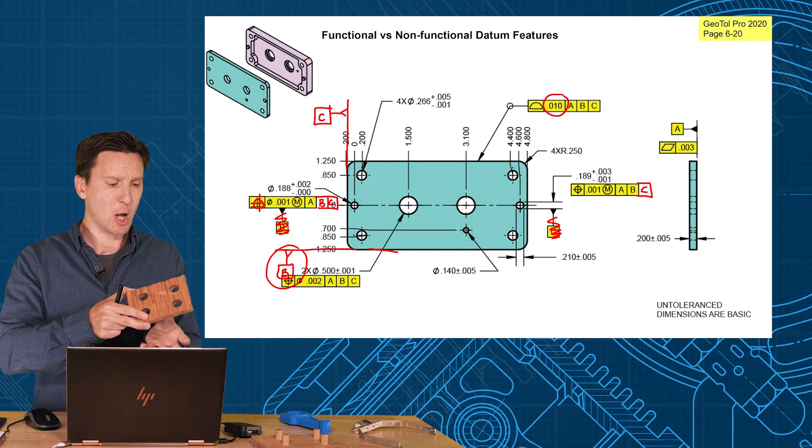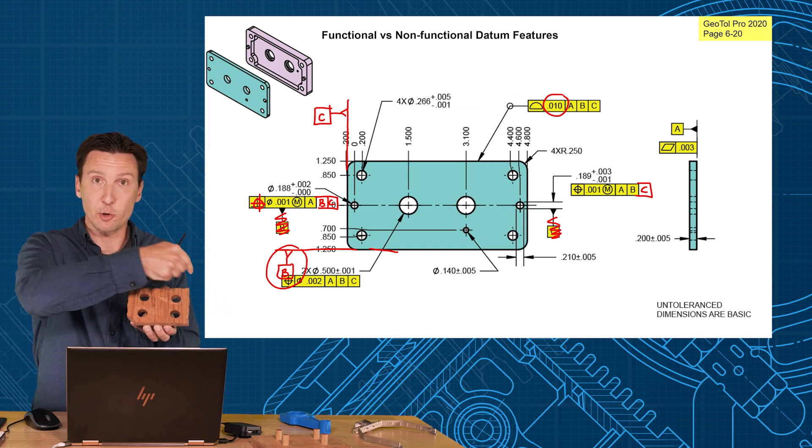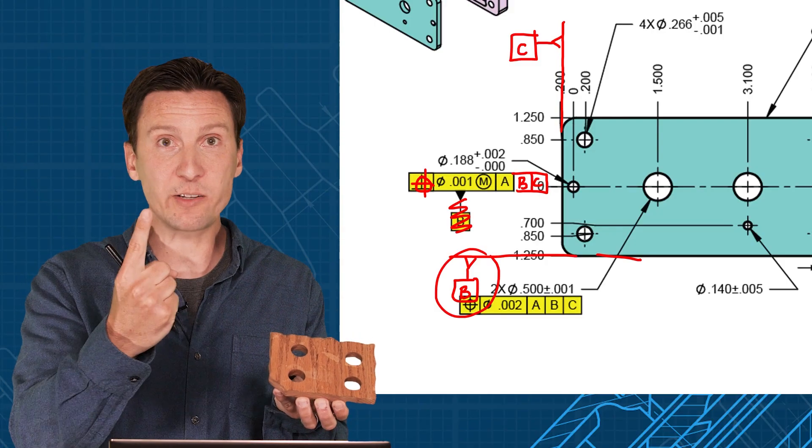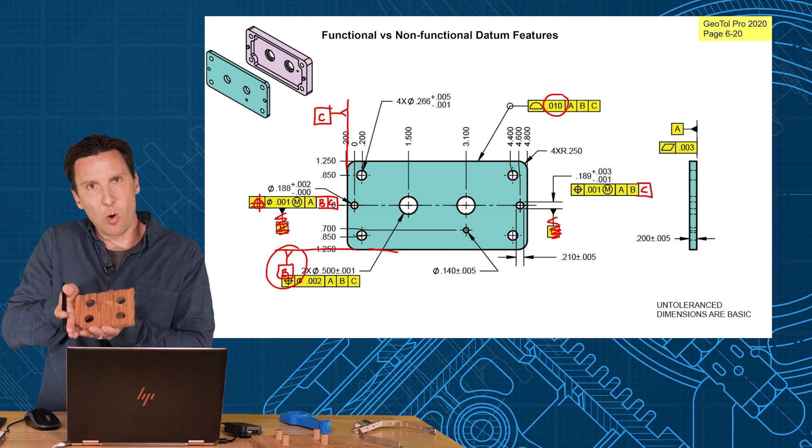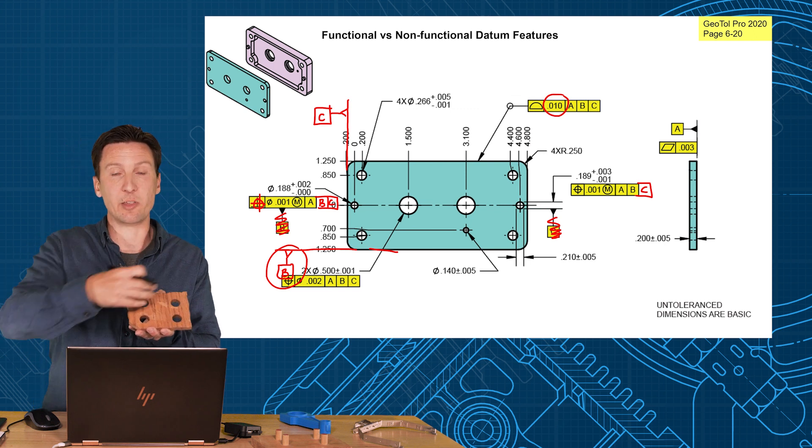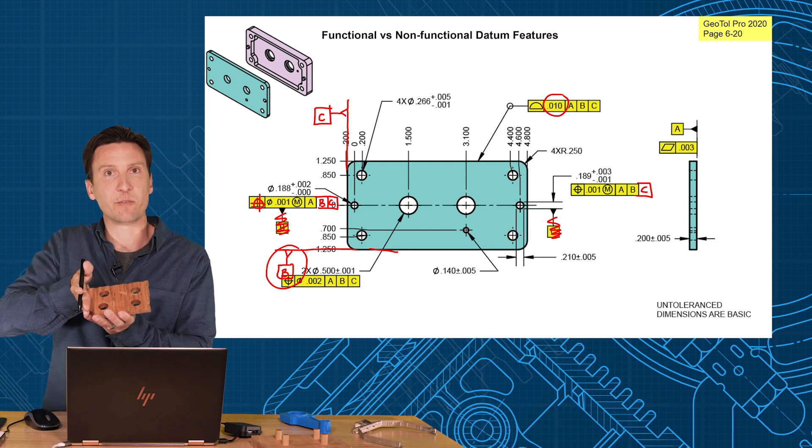A lot of times manufacturing will hold on this bottom edge here, not a datum feature at all, and just cut your critical datum features and all your critical tolerances all at the same time. Then you have one setup for everything and you have the accuracy of the machine. So we don't want to set up to one edge right here, then put the holes in, then get all ready on those and locate other things. We want to go from the inside out. That makes a lot more sense sometimes than going from the outside in.